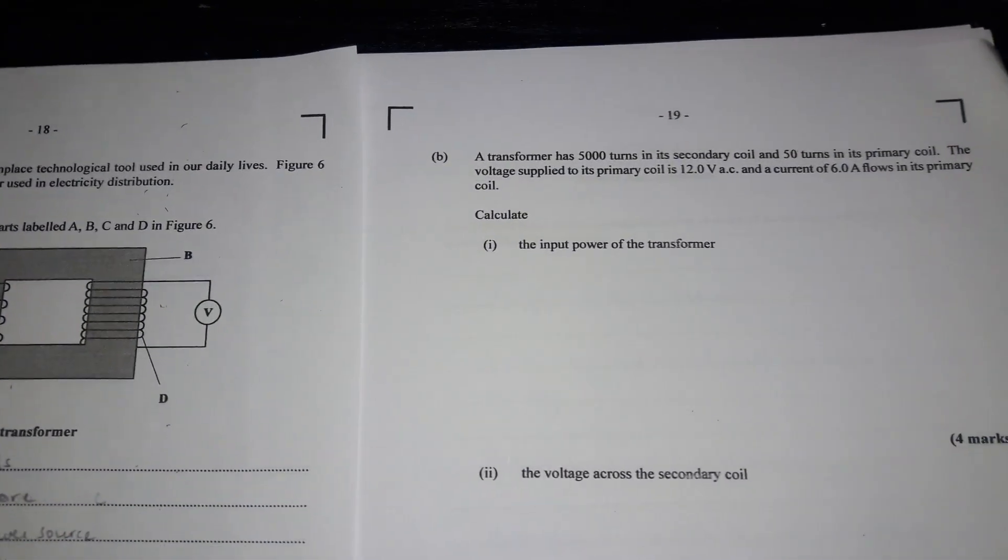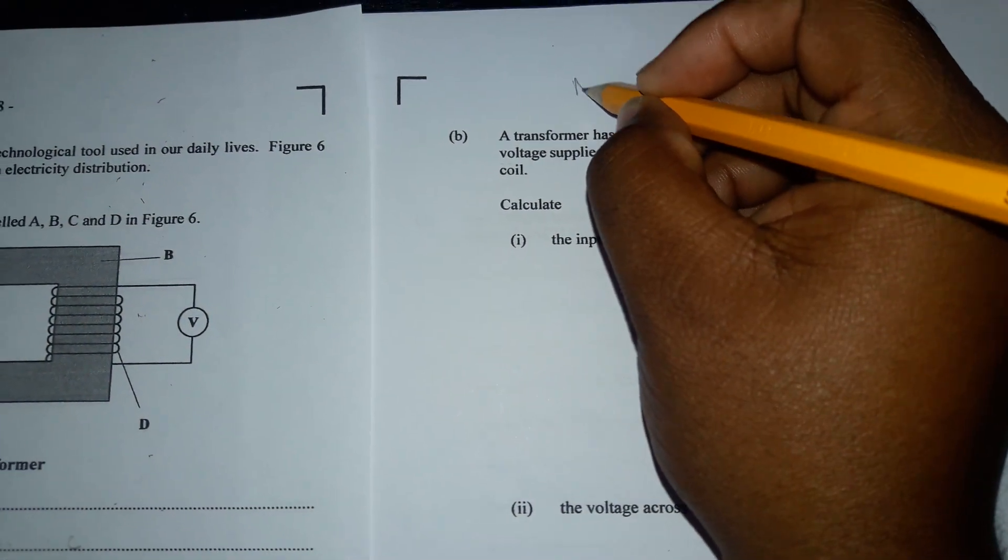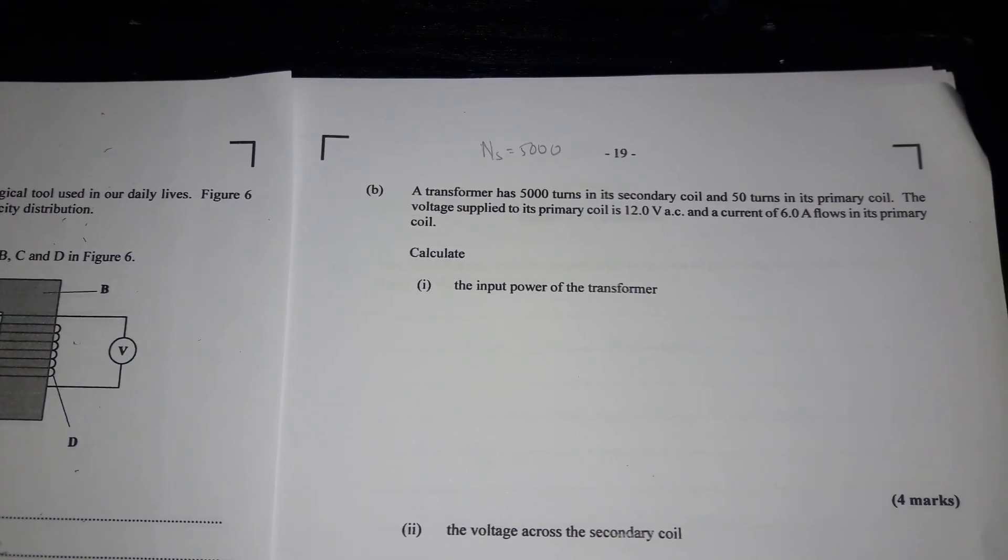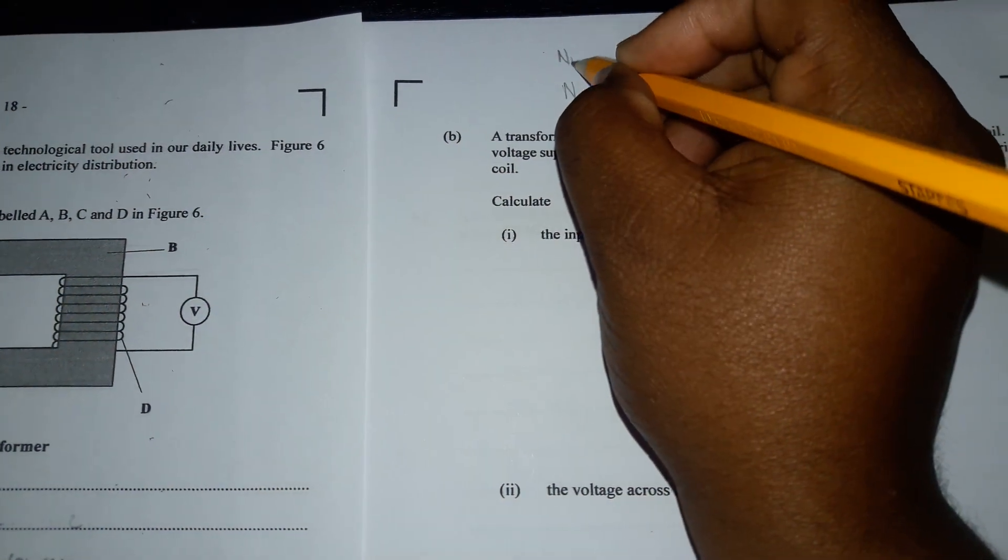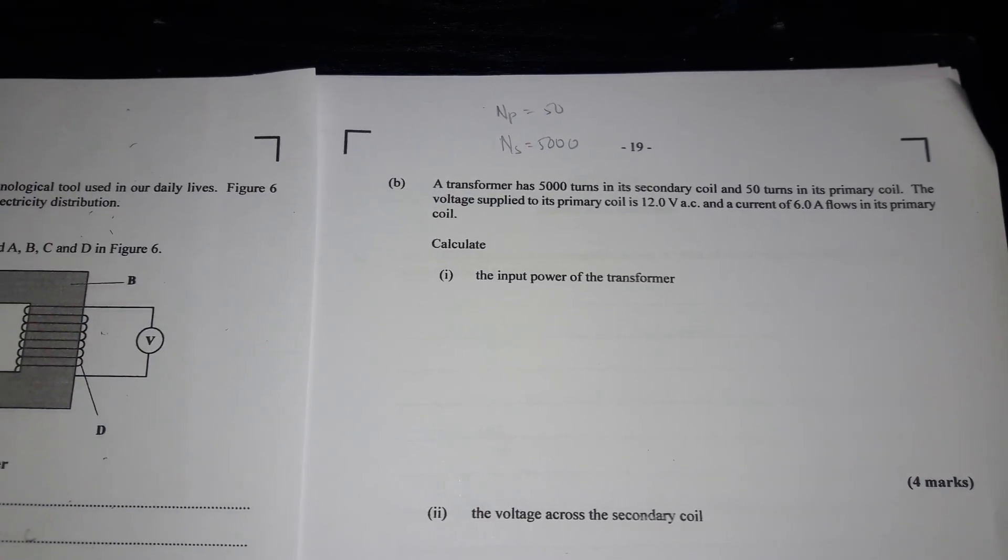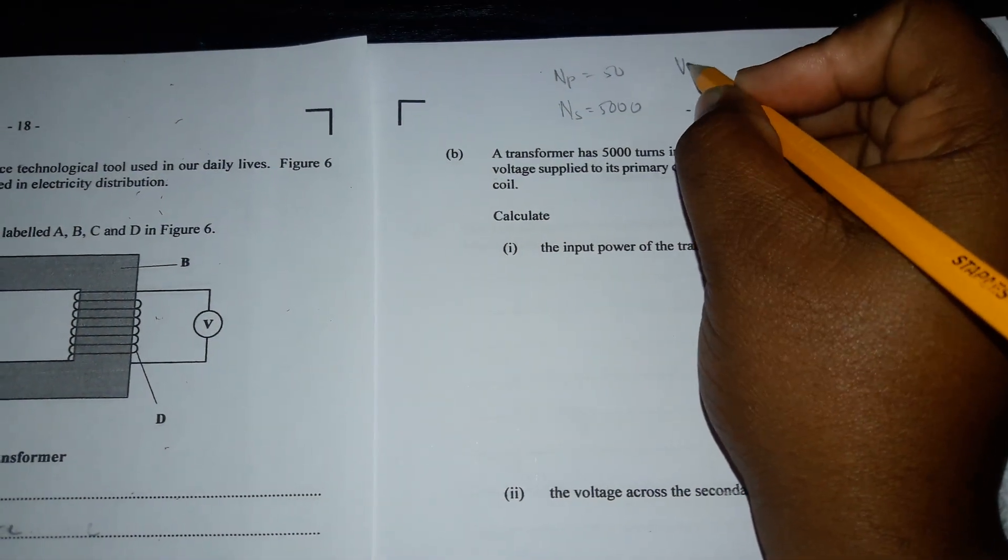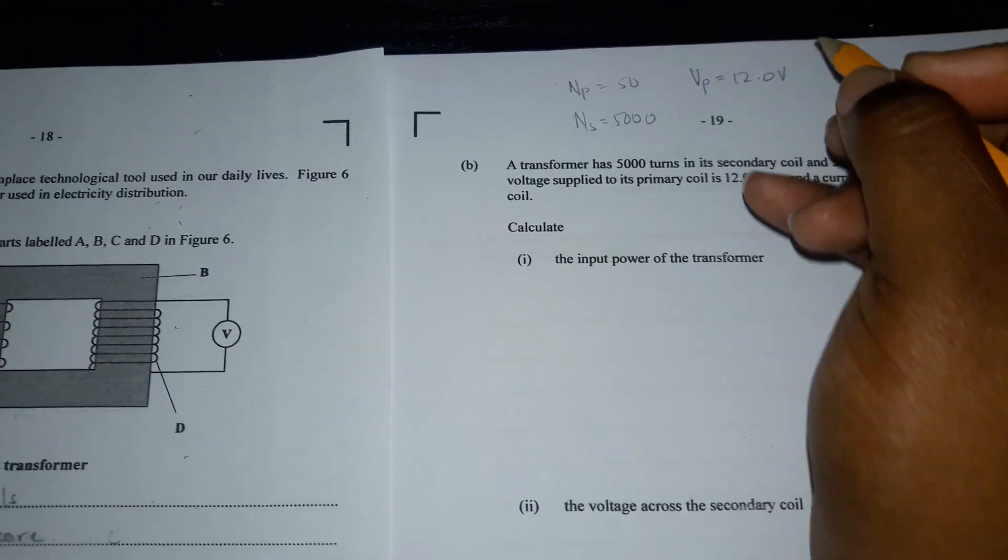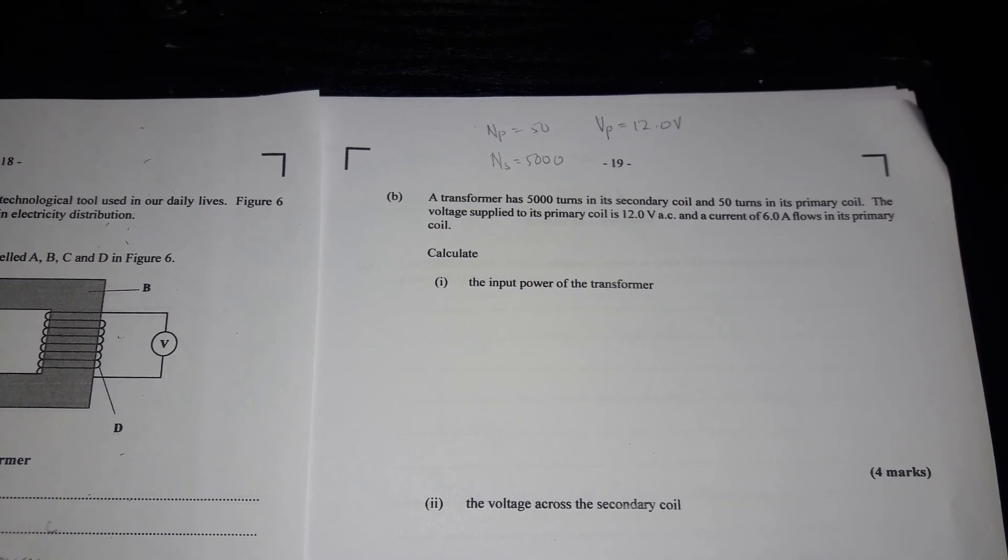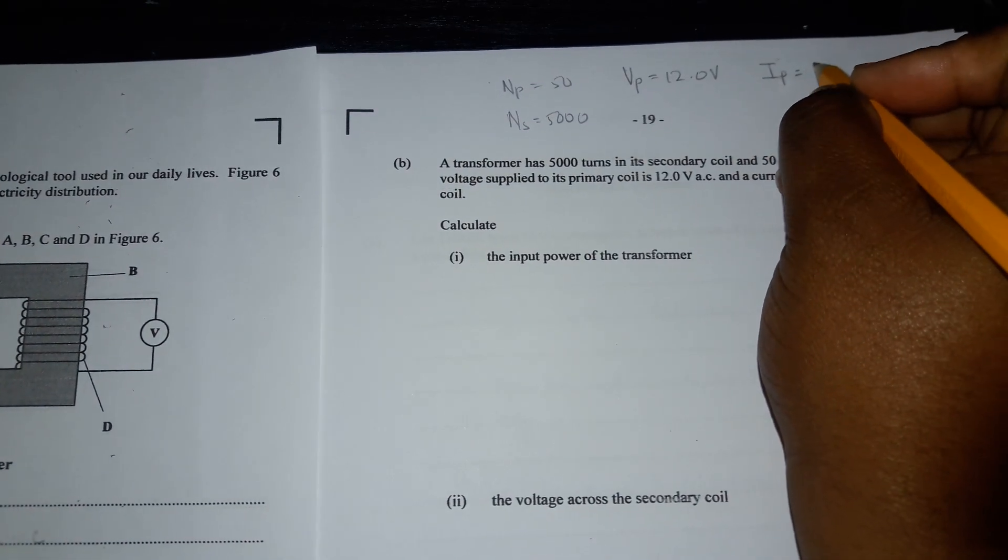A transformer has 5000 turns in its secondary coil and 50 turns in its primary coil. I'm going to write out these numbers: Np equals 50, Ns equals 5000. The voltage supplied to its primary coil is 12 volts, so Vp equals 12 volts. The current of 6 amps flows in its primary coil, so Ip equals 6 amps.